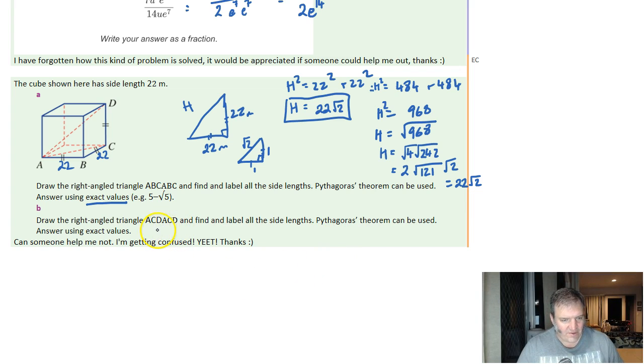Draw the right angle triangle ACD. So along the bottom, we've got 22 root 2. I think your calculator, your graphics calculator will actually give that to you anyway, so that's pretty nice. The height of the box here is still 22 because that's still one of my side lengths. This was the diagonal across the bottom.